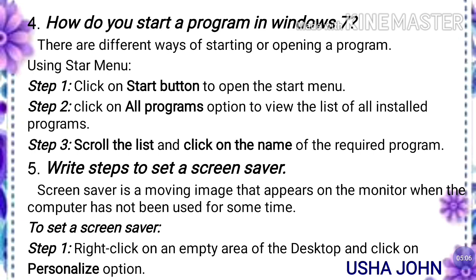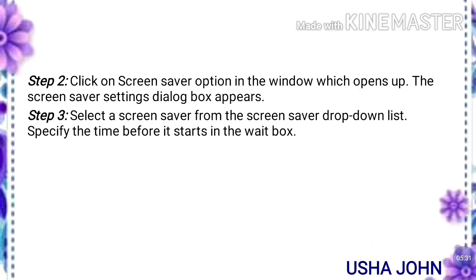Fifth one: write steps to set a screen saver. A screen saver is a moving image that appears on the monitor when the computer has not been used for some time. Step 1: right click on the empty area of the desktop and click on the personalize option. Step 2: click on the screen saver option in the window which opens.